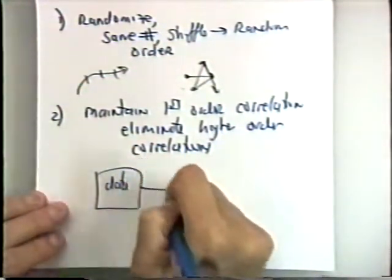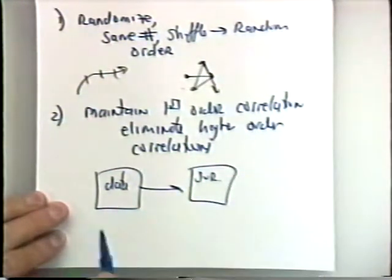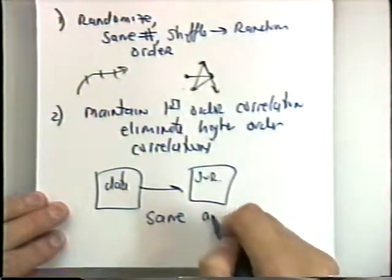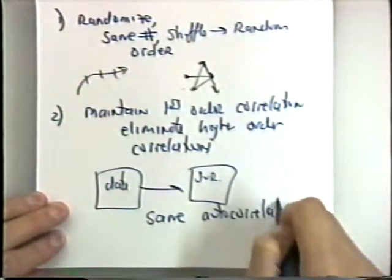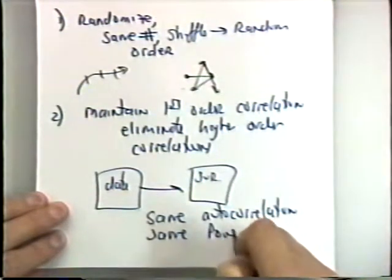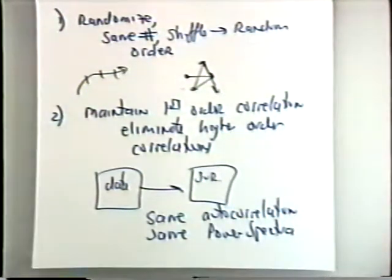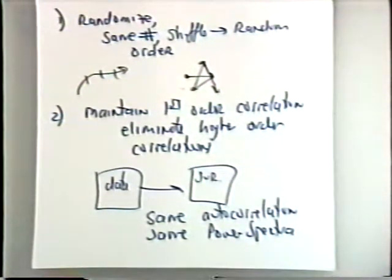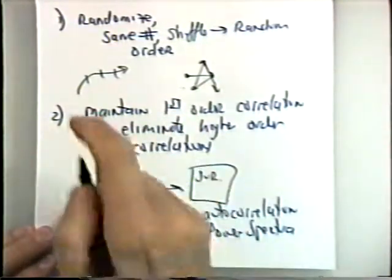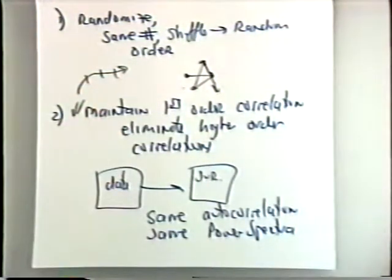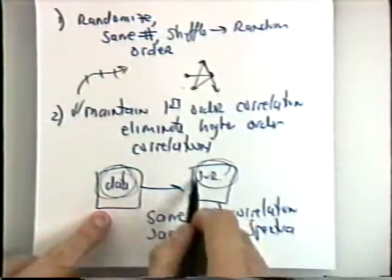But what people said they would like to do is maintain first-order correlations but eliminate higher-order correlations. In other words, they would like the original data and the surrogate to have the same autocorrelation function—which is equivalent to the same power spectra—but then different higher-order functions. The way you do this is you make a Fourier transform of the data, randomize the phases, and Fourier transform back. This has, for the moment, become the standard surrogate.